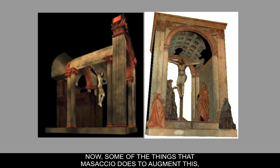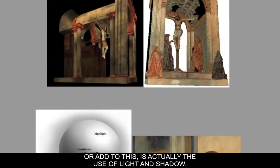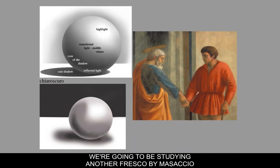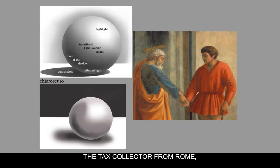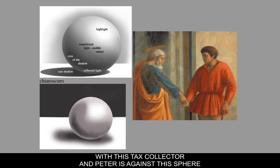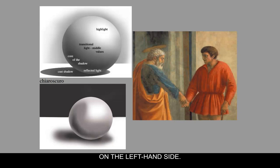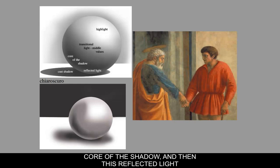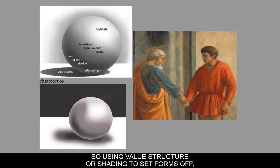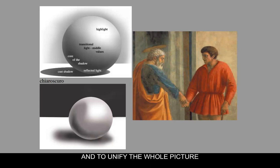Some of the things Masaccio does to augment this is the use of light and shadow. We're going to be studying another fresco by Masaccio — a little chunk of it — called the Tribute Money, zooming in on Peter actually paying the tax collector from Rome. Comparing the tax collector and Peter against the sphere on the left-hand side, we've discussed chiaroscuro — an Italian word literally meaning 'light and shadow.' The diagram with highlight, transitional tones, core of the shadow, and reflected light really makes a circle have volume. Using value structure or shading to set forms off and unify the picture makes it seem more illusionistically convincing — which is exactly what Masaccio does.